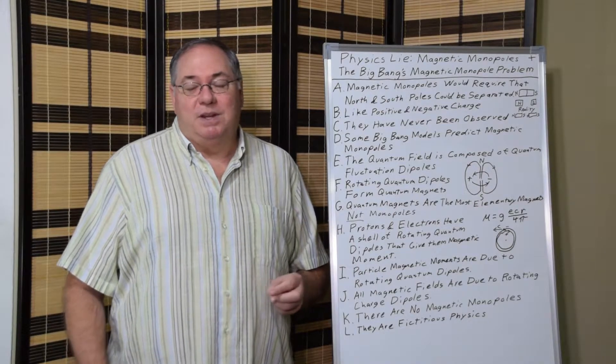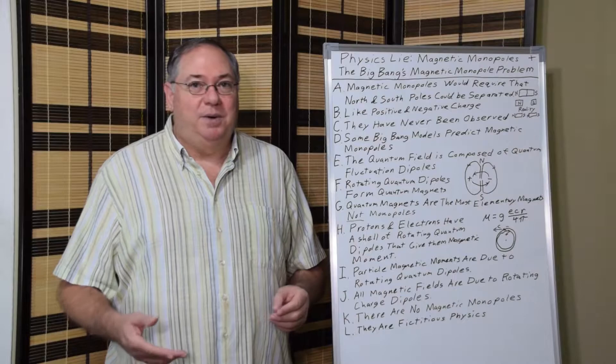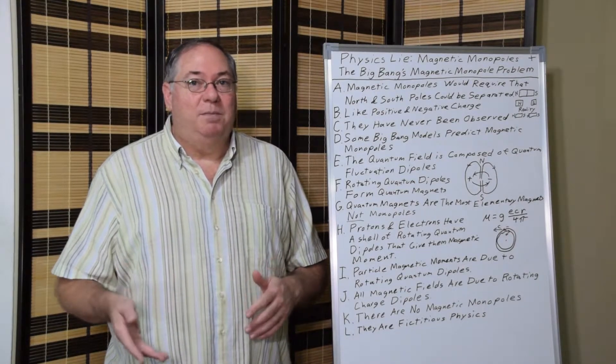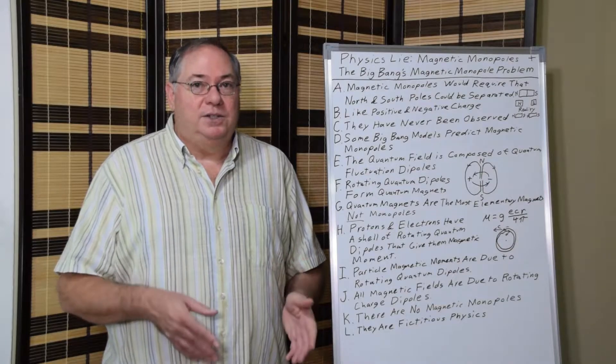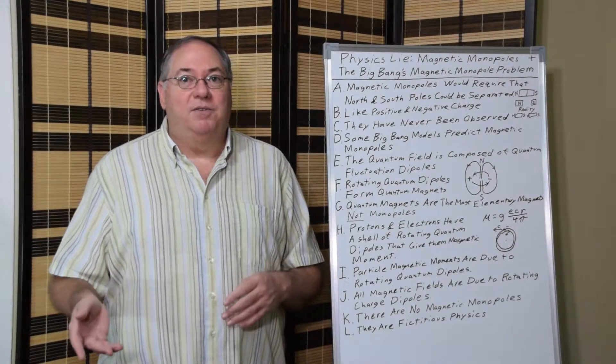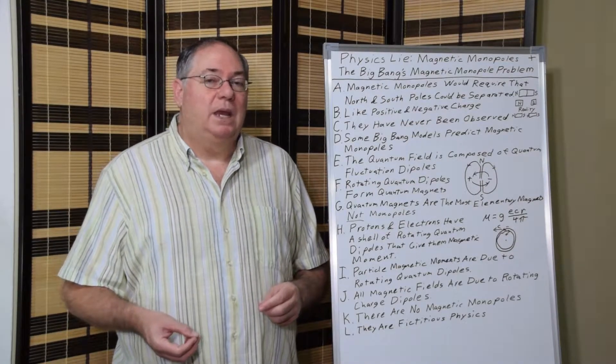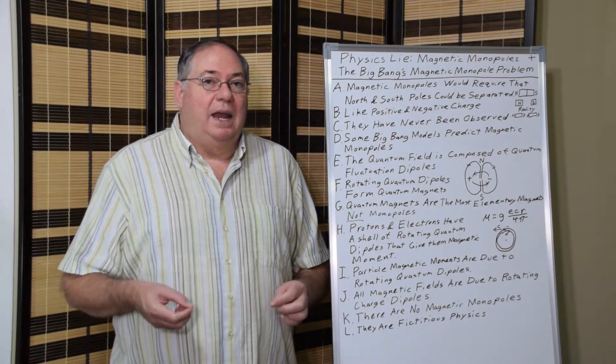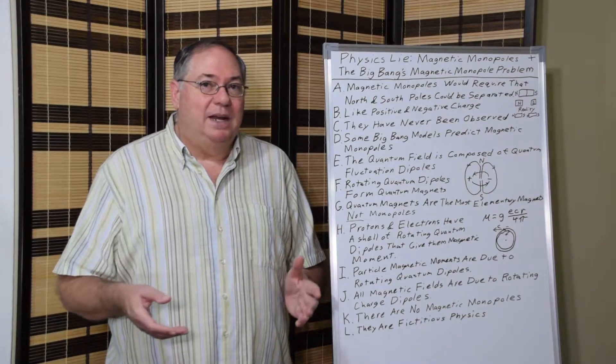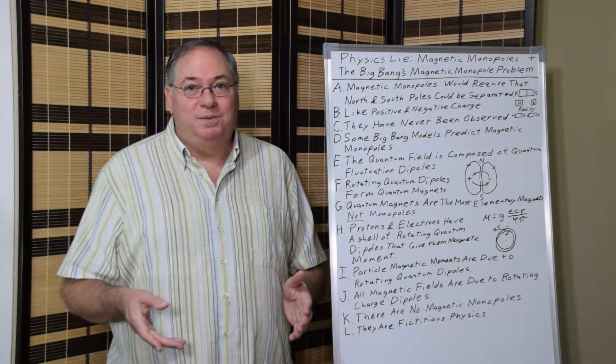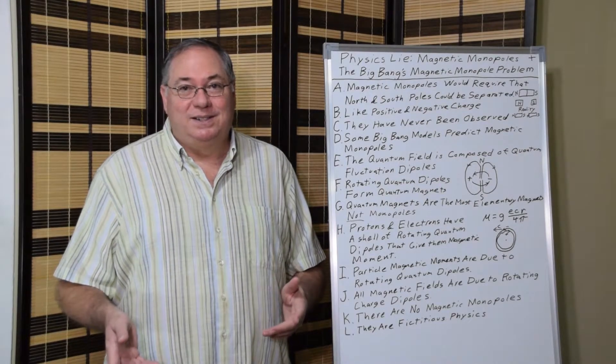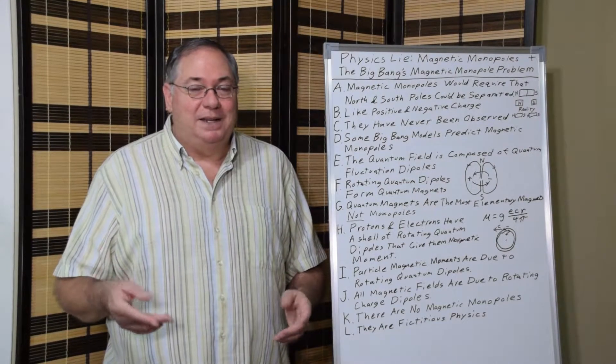And so this is confusing to some scientists who would like to think that there could be separate north and south poles like there are separate positive and negative electric charges. But that's not the way nature works. And what it comes down to is if there were magnetic monopoles, we would have seen them. And we don't see them, so they don't exist, and we really should get past them.